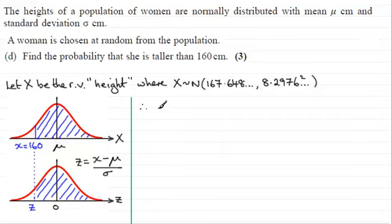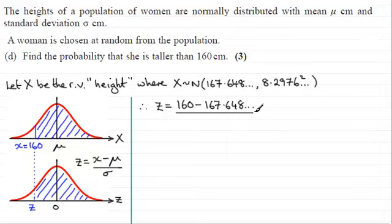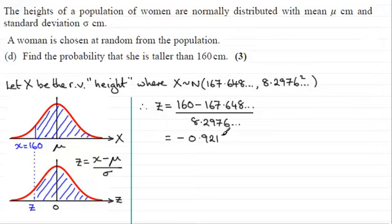So Z equals the observed value 160 minus the mean 167.648 — do use the unrounded versions in questions like this, it makes quite a big difference — all divided by the standard deviation. Remember, this is the variance; the standard deviation is just 8.2976. Doing this division, you should find Z is a negative number, which is what we'd expect being on the left of zero, and it's minus 0.9217.